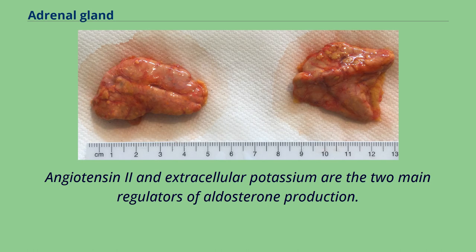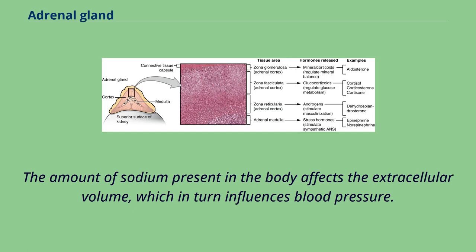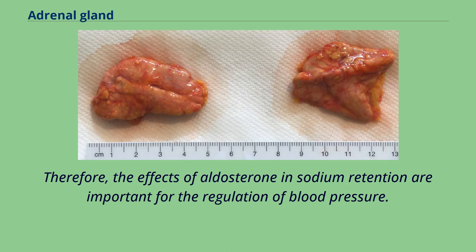Angiotensin II and extracellular potassium are the two main regulators of aldosterone production. The amount of sodium present in the body affects the extracellular volume, which in turn influences blood pressure. Therefore, the effects of aldosterone and sodium retention are important for the regulation of blood pressure.